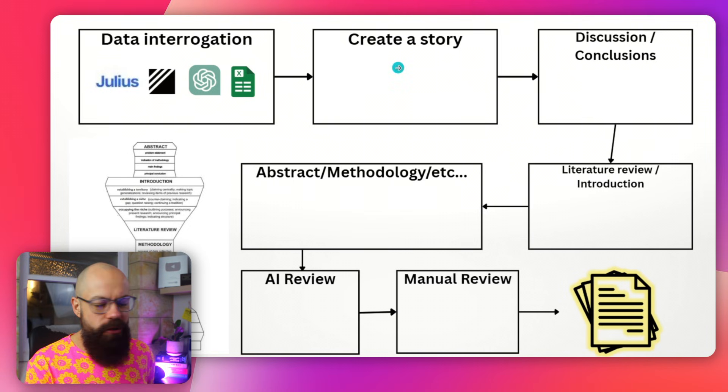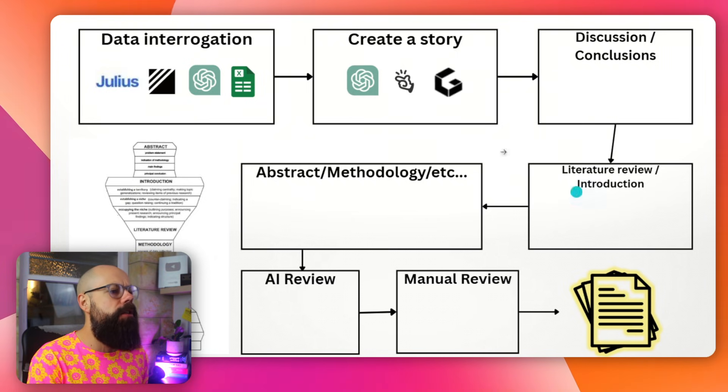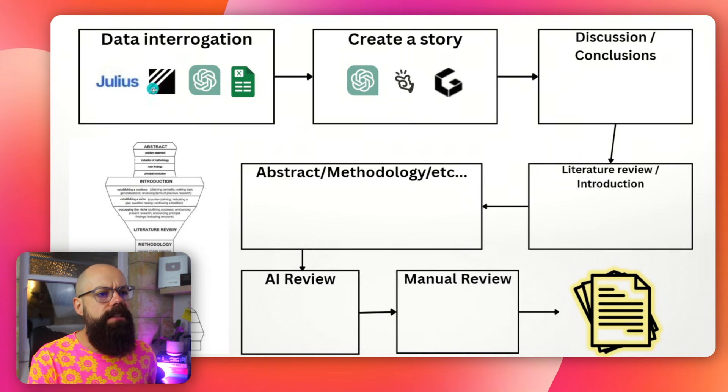The next step is to create a story. You want to make sure that when you present your paper, there is a clear, logical, compelling story — that means the journal has to accept it. You can use large language models like ChatGPT and Claude. What I've done is take figures and diagrams from my data interrogation, put them into ChatGPT, and ask: what story could you tell with this data? It comes up with some great options. A story should have the reason you're doing it, what you've found, and a compelling outcome.